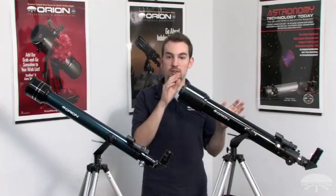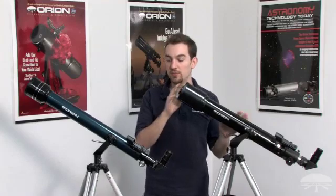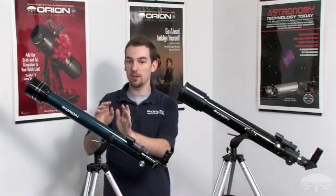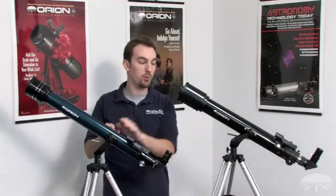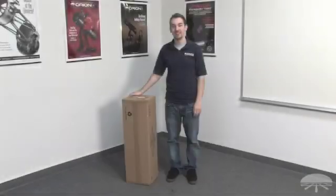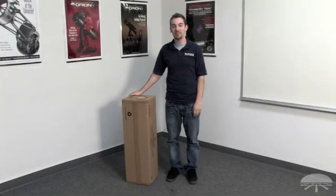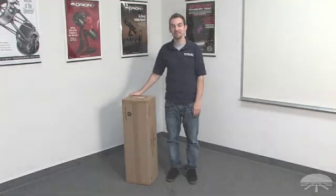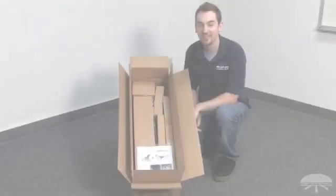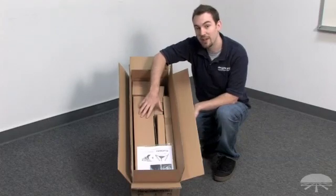Let's go ahead and get started with the assembly of the Observer 70. It's very similar to the assembly of the Observer 60. This is what your package will look like when it's delivered at your doorstep, and this is what it'll look like when you open your package.